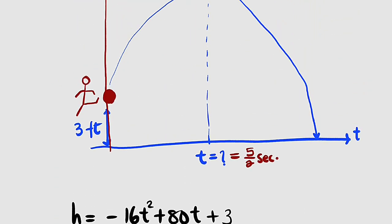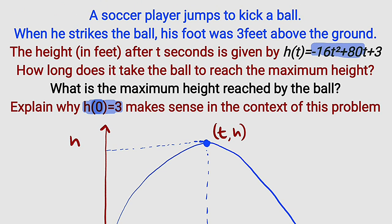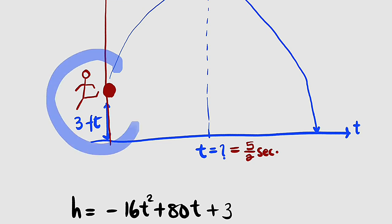Then the last question states that we should explain why h(0) = 3 makes sense in the context of this problem. If you substitute t = 0, which means when the time is 0 seconds, you will be only left with the constant, which is the h-intercept. But what does this mean? It means that when the time is 0 seconds, the height of the ball was 3 feet. And you can see it according to the picture here. The ball was 3 feet before it was kicked. You can use your own sentence to explain this in detail.